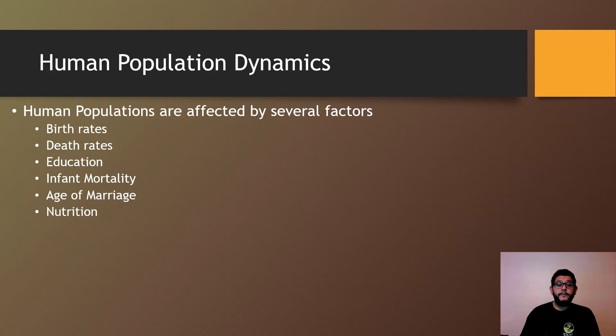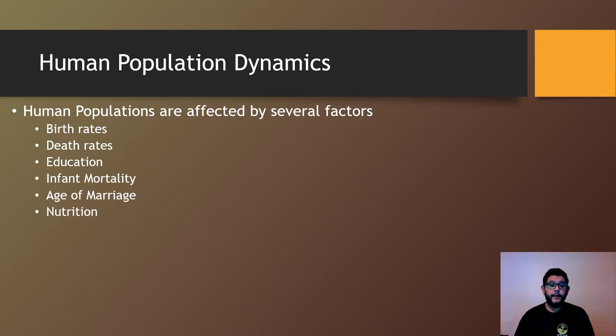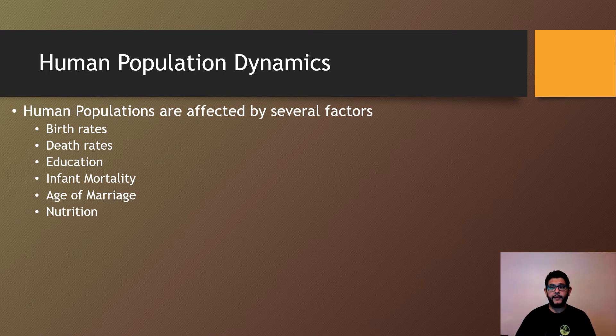There are several factors that are going to affect a human population. We mentioned some of these throughout the previous videos when it comes to biological populations that are not human. But in human populations there's kind of special factors here. Obviously it's birth and death rates just like any other population.